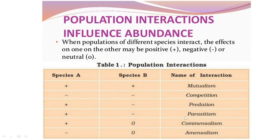Where one species grows at the cost of the other, that is known as parasitism. Then there is an interaction where one species is always benefited and the other is neither harmed nor benefited — that is commensalism. Finally, where one species is harmed without any effect on the other, that is amensalism. So we have: mutualism, competition, predation, parasitism, commensalism, and amensalism.